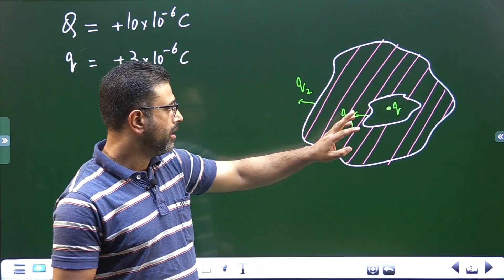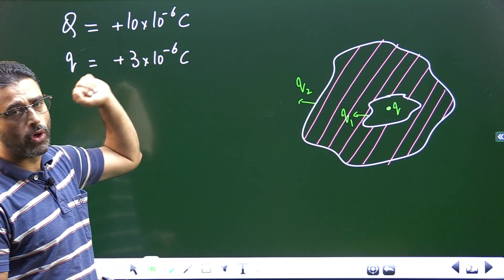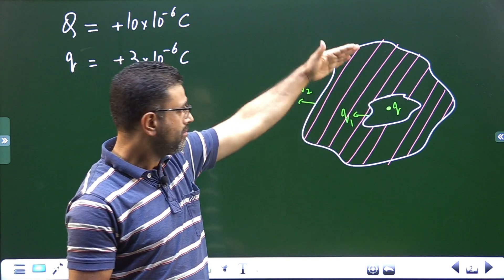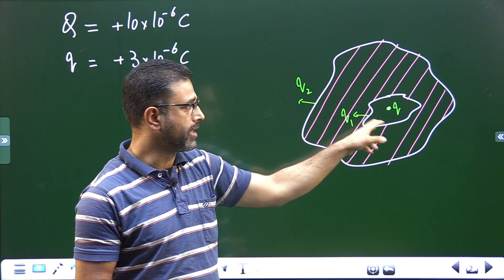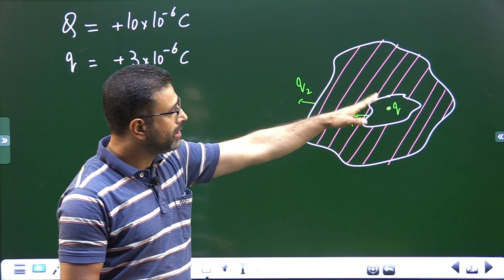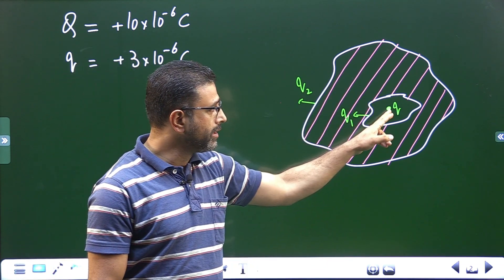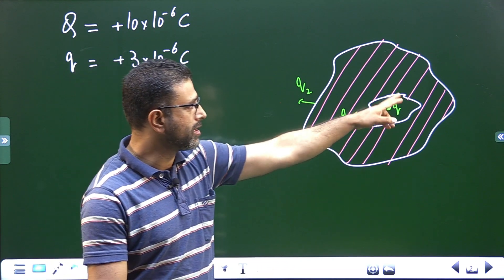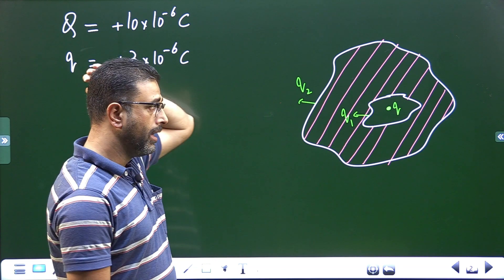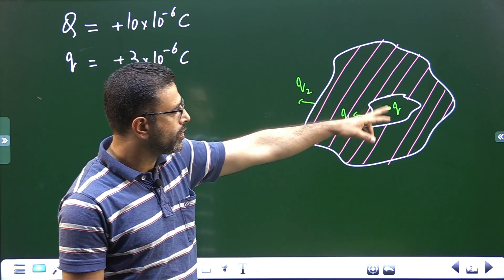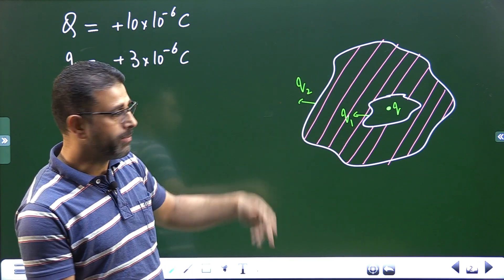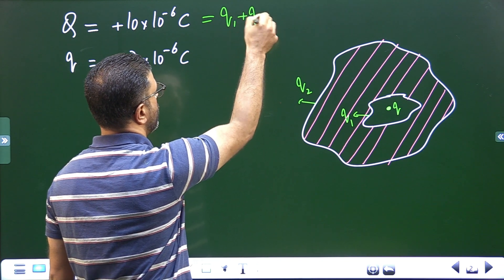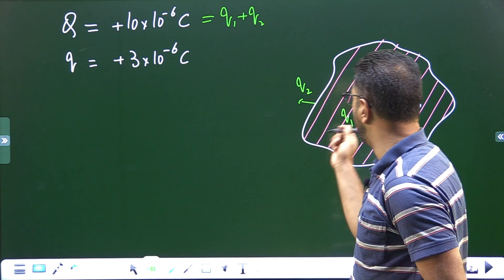We are given a metallic body with a cavity. The total charge of the metallic body is +10×10⁻⁶ C. Charge on a metallic body is only distributed on the surfaces — we have two surfaces: the outer surface and the inner surface of the cavity wall. I'm representing the charge on the inner surface as Q1 and on the outer surface as Q2, which means Q1 + Q2 equals the total charge Q of the conductor.